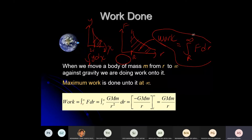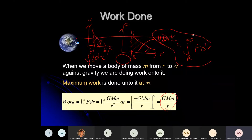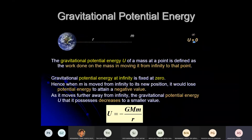The work is the integration from r to infinity of F dr. Since F equals GMm/r², when you do the integration you end up getting the formula GMm/r. This is the work done to bring a mass from r to infinity.